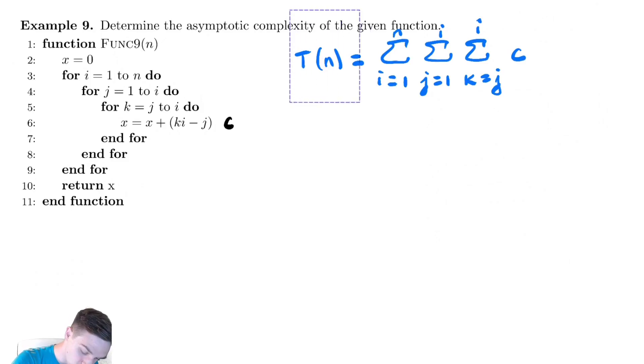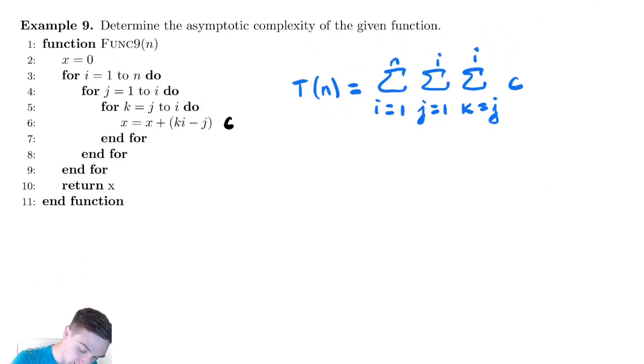Let us move this down to make it a little easier. Let's begin by simplifying the innermost summation. So we still have the sum from i equals 1 to n. And the sum from j equals 1 to i of c times the top bound minus the bottom bound plus 1. So we get i minus j plus 1 inside of there.